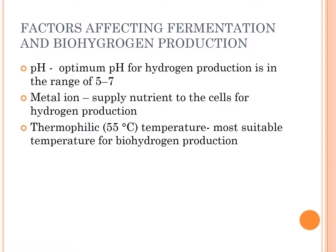Next are the factors affecting fermentation and biohydrogen production. There are three factors: pH, metal ion, and thermophilic temperature. pH should be in the range of 5 to 7 as it is the optimum pH for hydrogen production. Metal ion is used to supply nutrients to the cell and will produce more hydrogen. Thermophilic temperature of 55°C is the most suitable temperature for more biohydrogen production.